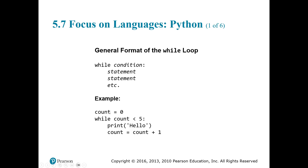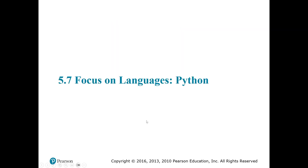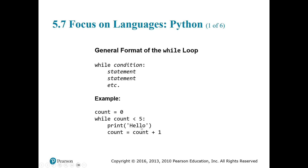We go through the loop again — while count is less than five, count is one, still less than five, so we print 'hello' and keep going until count equals four. We print 'hello' again, increment count to five, then check the condition: count is not less than five anymore. The condition 'count less than five' is not inclusive — it does not include five. If it were inclusive it would be 'count less than or equal to five'.